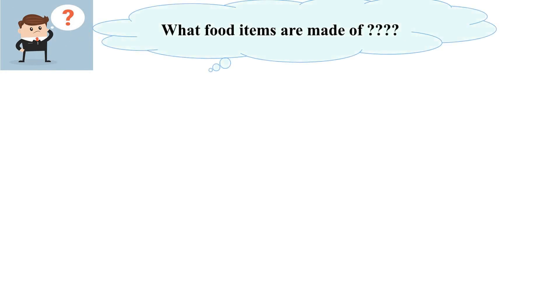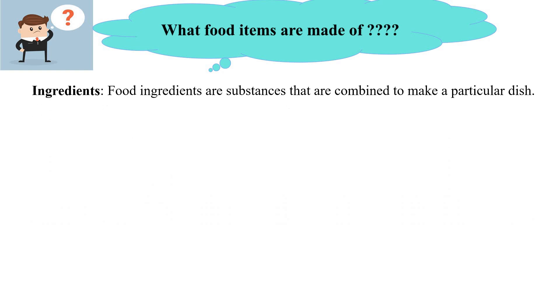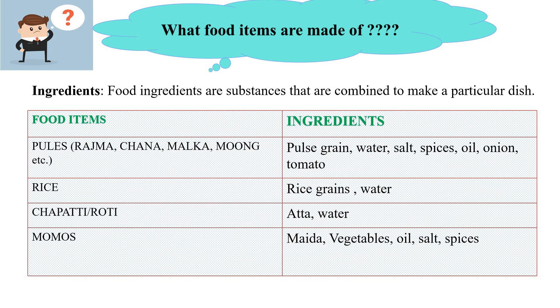Now let's find out what food items are made up of. The answer is ingredients. Food ingredients are substances that are combined to make a particular dish. For example, to make rajma you would need rajma grains, water, salt, spices, oil, onion and tomato. And to make rice, you just need two ingredients — rice grain and water. For making chapatis, you need wheat or atta and water. And for momos, you would need maida, vegetables, oil, salt and spices. So with the help of these ingredients, you can make your favorite dishes.